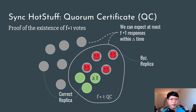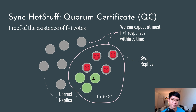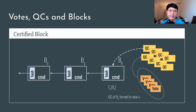A QC is essentially a proof of the existence of F plus 1 votes for a given block in a certain view. It could be implemented by some fancy threshold signature scheme or just by putting together a set of signatures, where each one of them certifies one among F plus 1 votes. The key observation for QC is that among all votes, there must be at least one vote from an honest replica, because there are F plus 1 votes. Moreover, it is also the best effort after a voting process to demonstrate the result, because given F adversaries that could simply refuse to respond, one can only hope for F plus 1 votes within delta time.